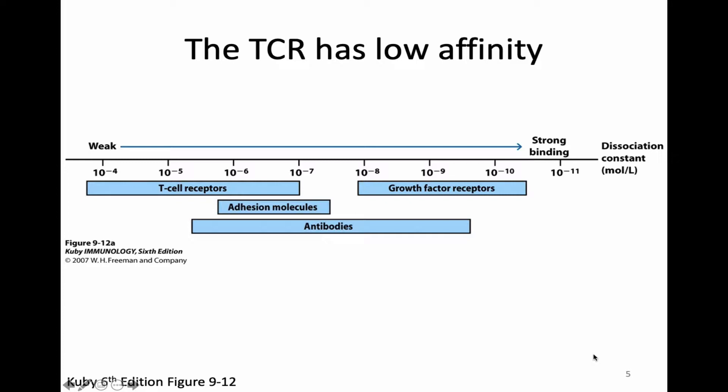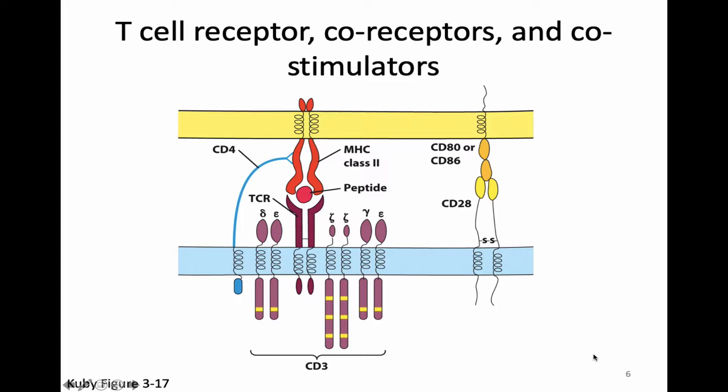One important thing to know about the T cell receptor is that it has relatively low affinity compared to many other types of protein-protein interactions we see in biology. The T cell receptor's binding to its antigen and MHC is quite weak compared to things like adhesion molecules, growth factor receptors, or antibodies. As a result, when we think about T cell interactions with an antigen-presenting cell, we often need that T cell receptor to interact with its ligand — MHC plus peptide — while there are also some partner proteins interacting between the T cell and the antigen-presenting cell, to make up for that low affinity.